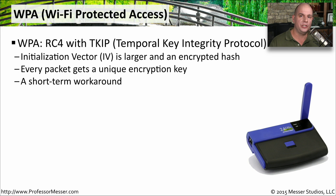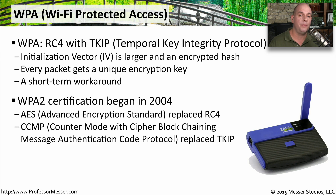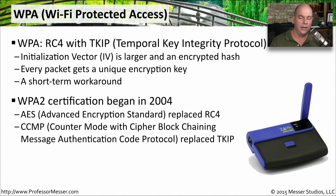WPA was more of a short-term workaround, so we came up with an update called WPA2. Certification for WPA2 began in about 2004. The RC4 cipher was replaced with AES — Advanced Encryption Standard — and TKIP was replaced with CCMP, the Counter Mode with Cipher Block Chaining Message Authentication Code Protocol. By combining these updates, we created a much more secure method, and even today WPA2 is the standard encryption used on wireless networks.